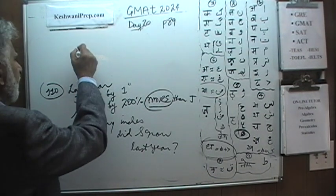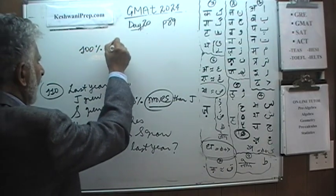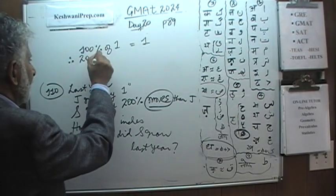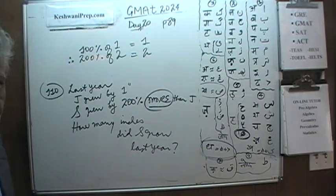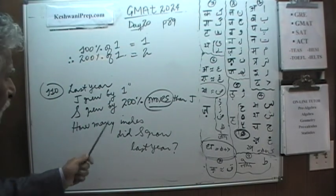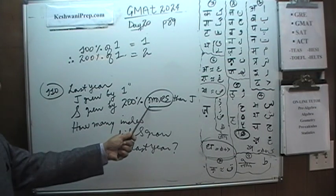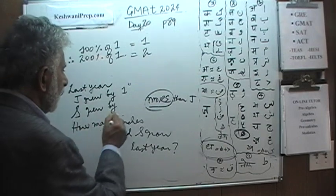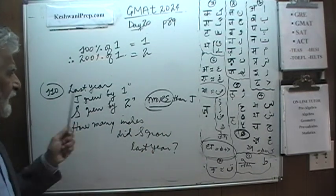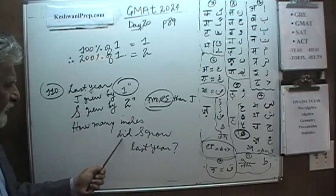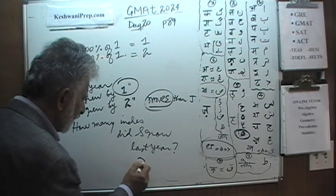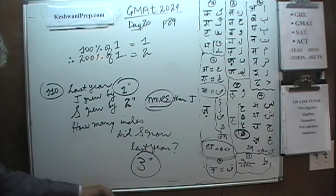So here is the deal. We already know obviously that 100% of 1 is 1. That is not something earth shattering. Therefore, 200%, as you can see, 200% of 1 must be 2. It is bloody silly. Which means, it says J grew by 200% more. 200% of 1 is 2. S grew by 2 inches more than J. Or rather S grew by 2 inches more than J. J we knew grew by 1 inch. The question is how many inches did S grow? S must have grown, this guy grew by 1 inch and this guy grew 2 inches more than this guy, so he must have grown by 3 inches. That is all.